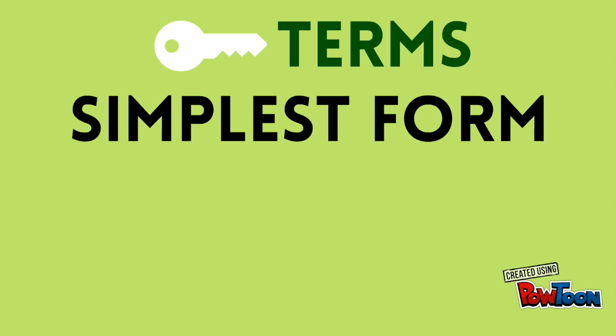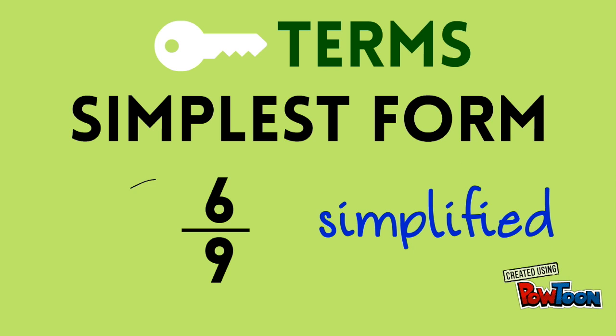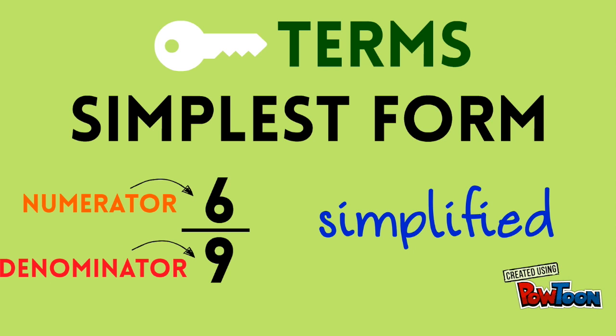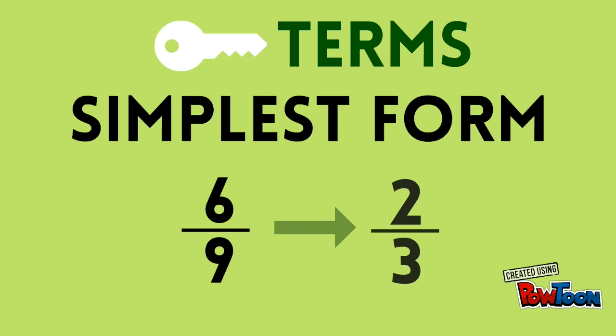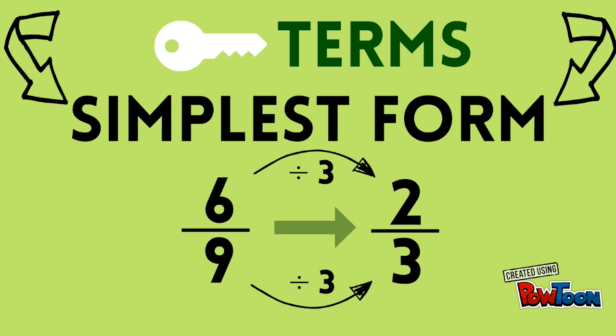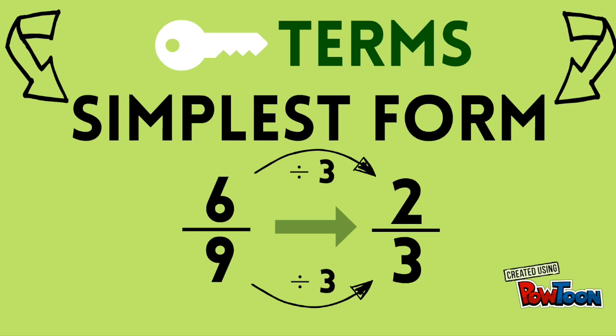Now we're ready to review simplest form. A fraction can be simplified when its numerator and denominator can be divided by the same number. 6 ninths can be simplified to the equivalent fraction 2 thirds by dividing both the numerator and denominator by 3. If it is not possible to divide both the numerator and denominator by any number except 1, the fraction is said to be in simplest form. 2 thirds is in simplest form because the only common factor of 2 and 3 is 1. Since they do not have any other common factor, I'm unable to divide any further.